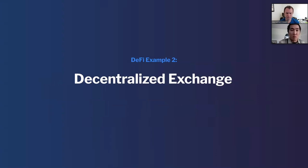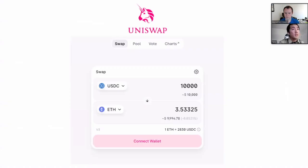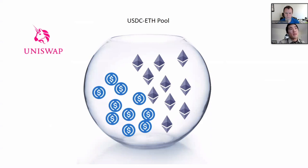Now let's go over what a decentralized exchange looks like. The largest DEX on Ethereum is Uniswap — it allows users to swap any ERC-20 token with another ERC-20 token without a centralized intermediary. An ERC-20 token is simply a token on the Ethereum blockchain. The UI is simple: take one asset like USDC, say how much ETH you want to buy, and swap immediately.